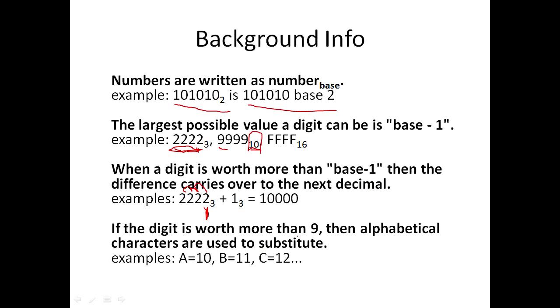If you have a digit that is worth more than 9 and the base allows it, then you start using capital alphabetical characters instead of numbers for those digits. In that case, A is worth 10, B is worth 11, and so on.